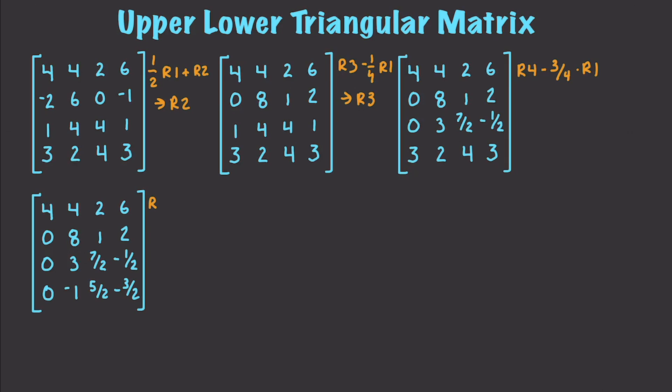So to do so, I say R3 minus 3 over 8 times R2, put this inside of R3. Whenever I do that, I get 0, 0. This is starting to become a little bit more complicated. This is 25 over 8 and negative 5 over 4.